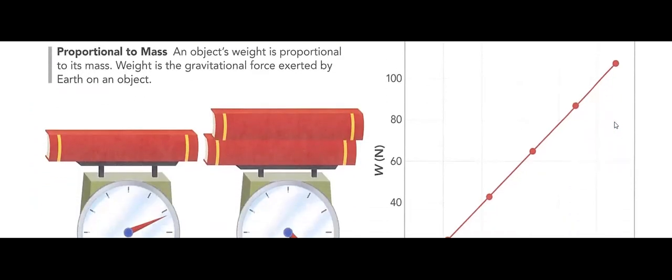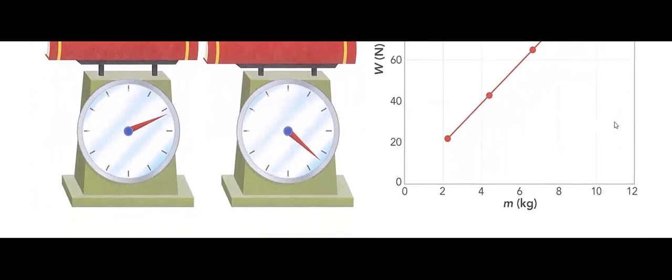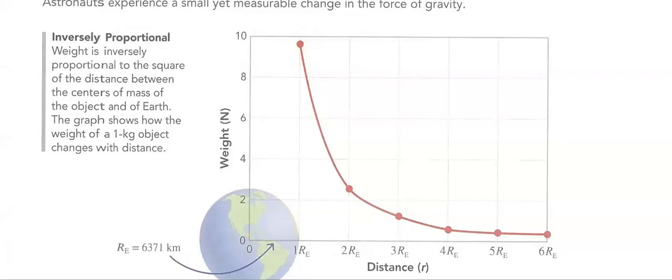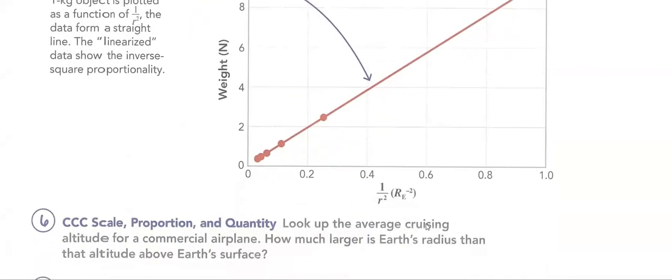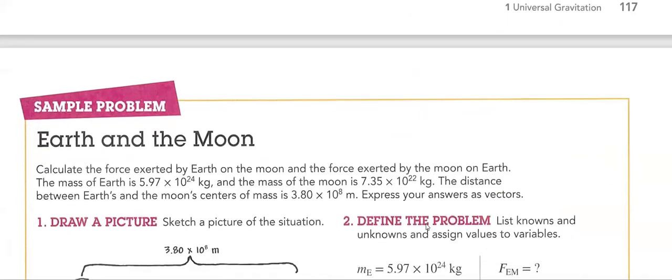Proportional to mass. How is weight proportional to mass? We study graphs. We will interpret data and learn many more objectives. We will see how distance and weight are inversely proportional to each other. Weight is inversely proportional to the square of the distance between the center of masses of the object and of Earth. The graph shows how the weight of a one kilogram object changes with distance. If we plot it like this, it's going to be linear.